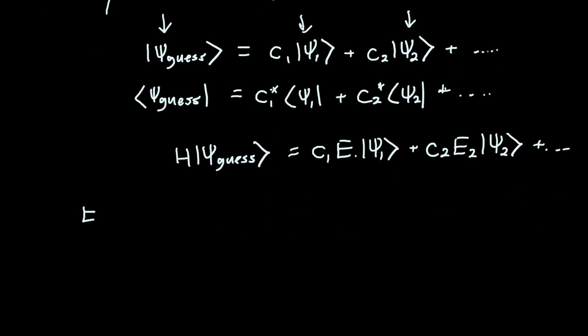And so we can figure out what our guess energy is by just left multiplying by this. And you'll notice that because each one of these wave functions ψ1, ψ2 is orthogonal to all the others—and you can prove that using the fact that H is Hermitian—when we multiply, only the corresponding terms will matter. So we'll get that our guess energy is |c1|²E1 + |c2|²E2 and so on.